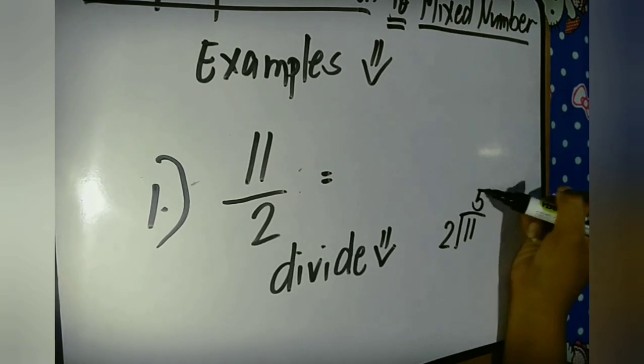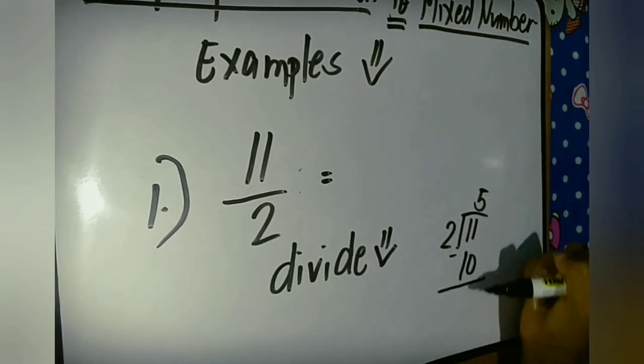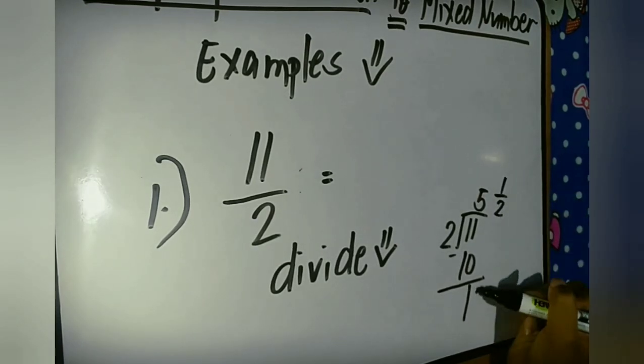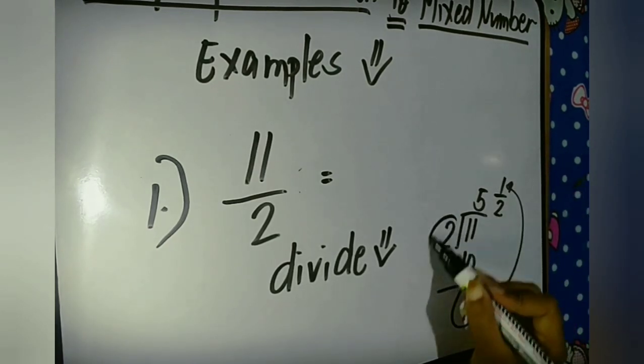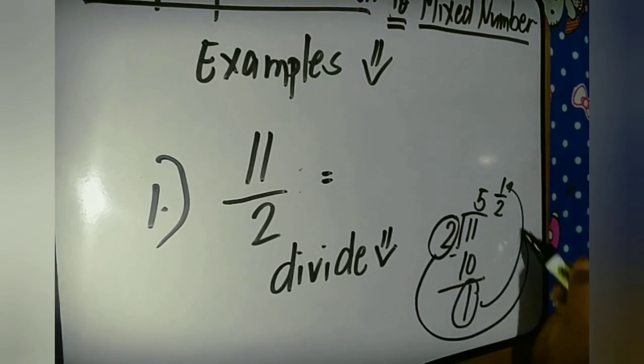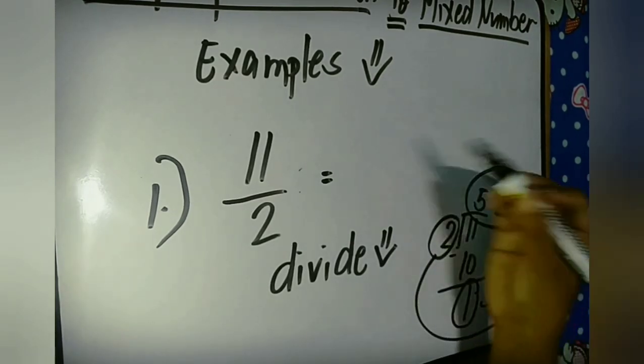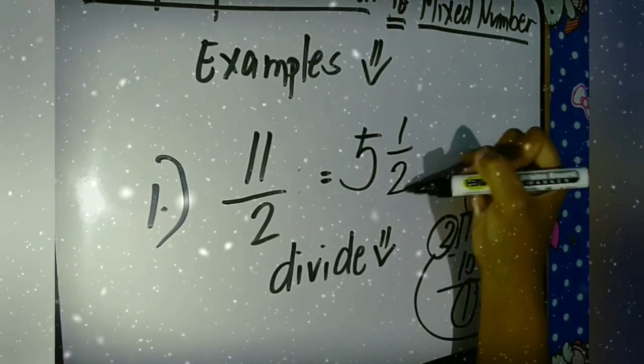So 11 divided by 2, the answer is 5. 5 times 2, the answer is 10. And 11 minus 10, the answer is 1. And then 1 will become our numerator and 2 will become our denominator. So our final answer is 5 and 1 half.